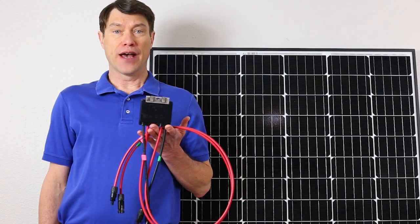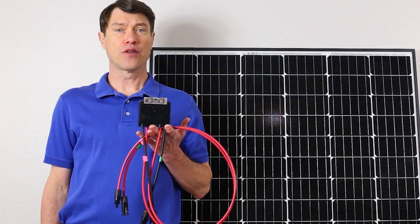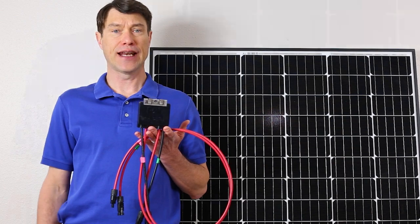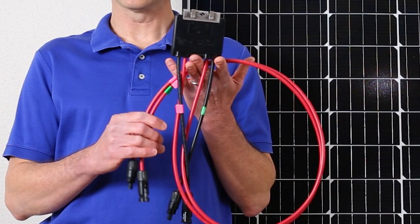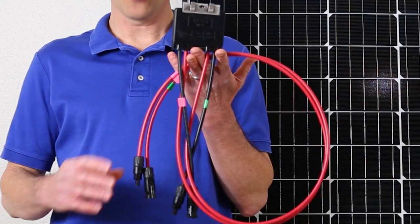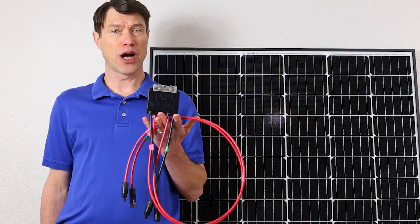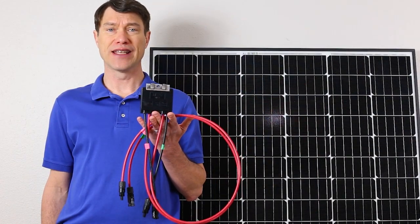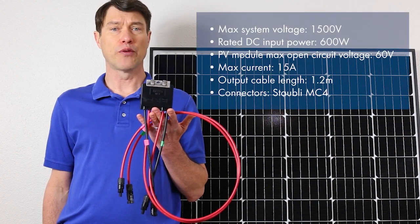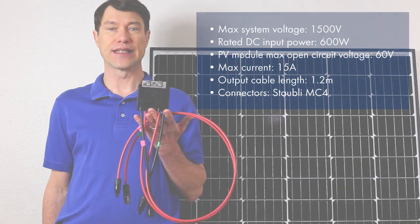The JMS-F device works with modules up to 600 watts, 60 volts, and 15 amps. The red output leads are 1.2 meters in length, and all connectors, output, and input are true MC4. Please note that every module in the array must be equipped with the JMS-F device to meet all of the rapid shutdown requirements of the 2017 NEC.